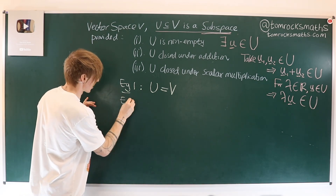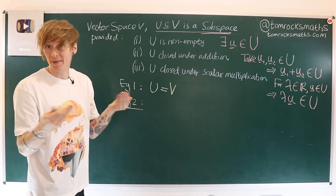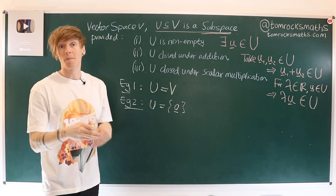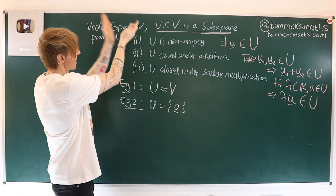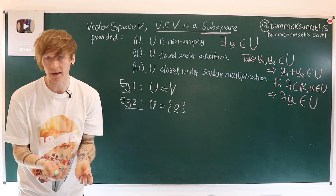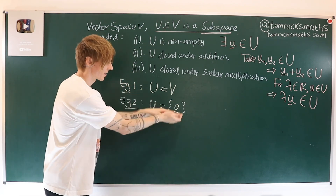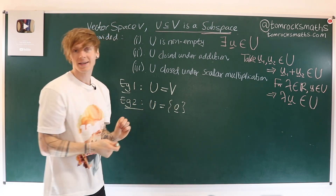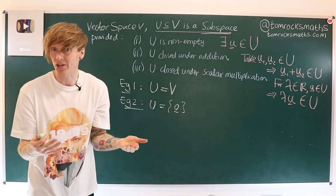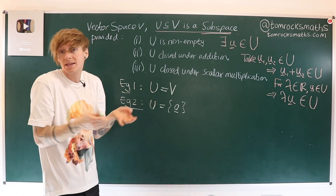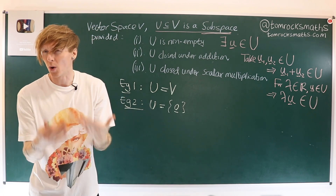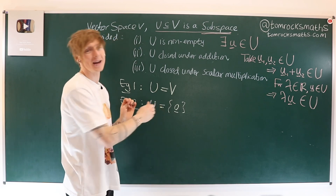A second trivial example — also true for any vector space V — is to take U to be just the zero vector from V. We have a well-defined vector space V satisfying all axioms, so a zero vector exists within V. If we just take the zero vector and nothing else, this will in fact be a subspace. First, is it non-empty? Well, we have zero — zero is an element, so it is indeed non-empty.